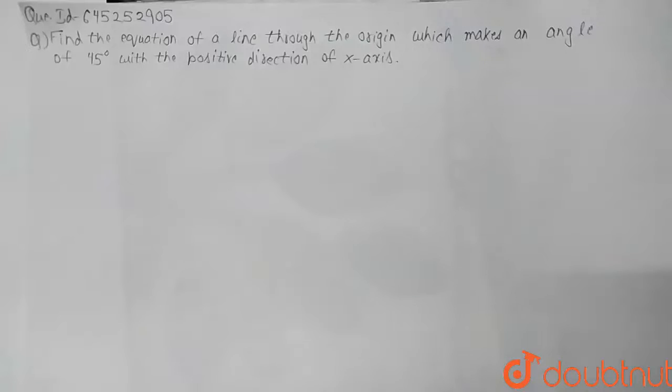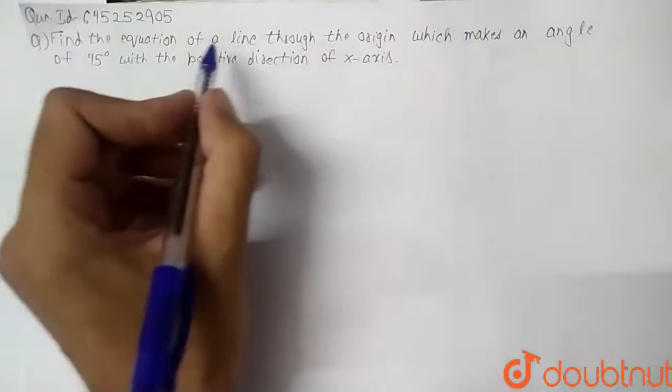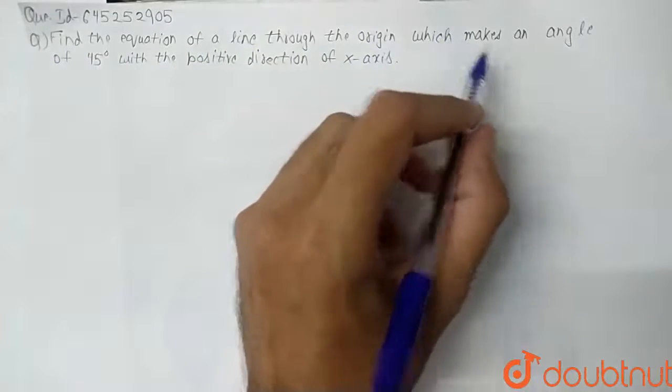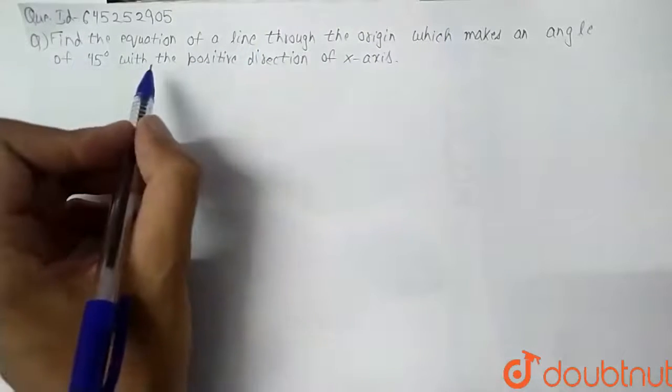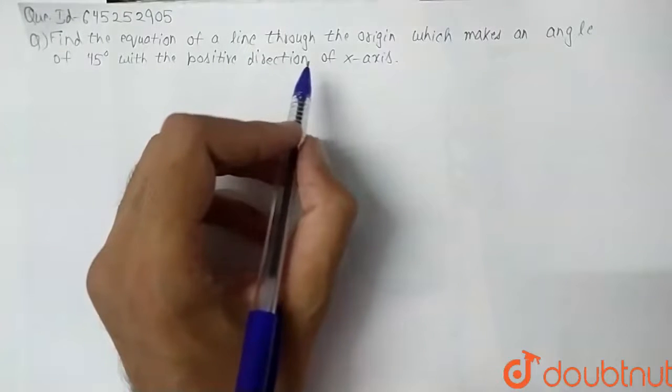Hi everyone, today's question is: find the equation of a line through the origin which makes an angle of 45 degrees with the positive direction of x-axis.